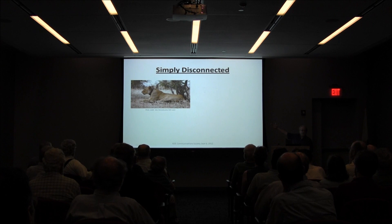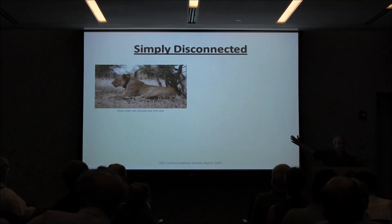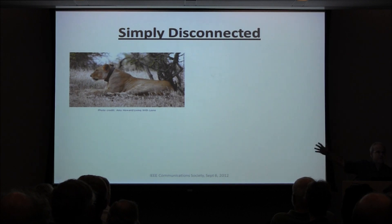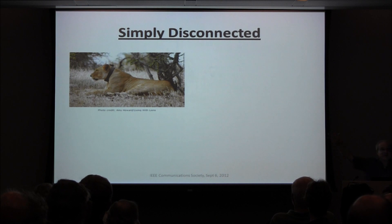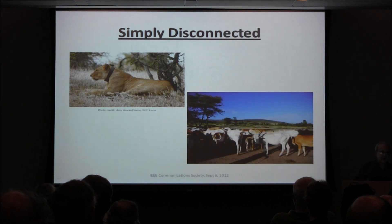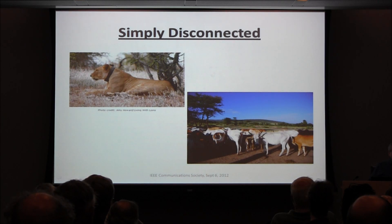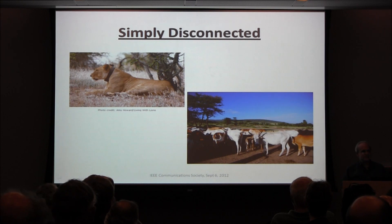If you watch recent nature shows, you'll notice lions are wearing collars with cellular phones. Every lion in the Serengeti has a cellular phone account and a GPS unit. So you can get things to work, but the Maasai can't do it for their cows, because they can't justify buying a cellular account for each and every cow. So this is not a technical issue — we have the technology.